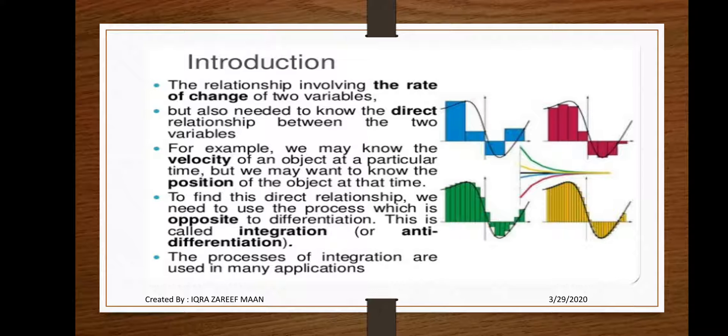For example, we may know the velocity of an object by using derivatives at a particular time, but we may want to know the position of the object at that time.